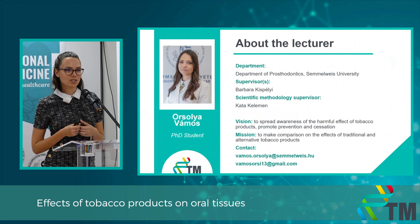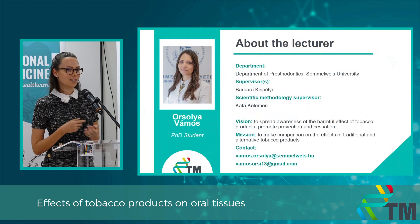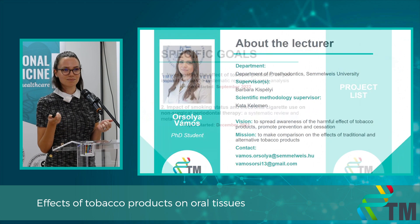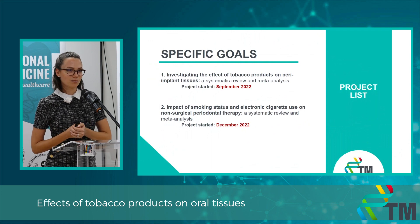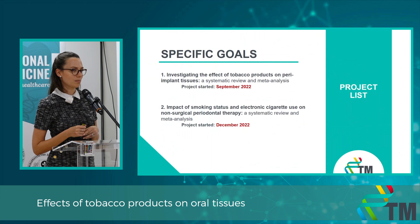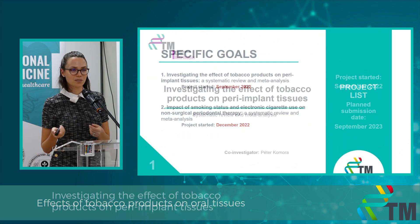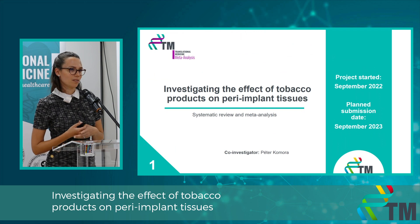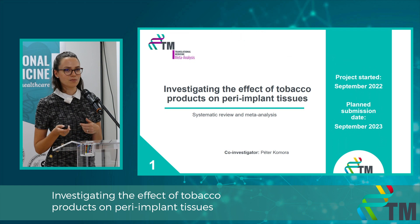To achieve this, my mission is to make a comparison on the effect of traditional and alternative tobacco products. Here you can see the list of my specific goals. Currently I am working on two systematic reviews and material analysis. I started the first one in September and the second one in December. Let's move on to my first project, which is investigating the effect of tobacco products on peri-implant tissues.